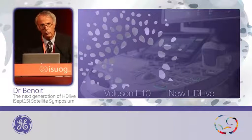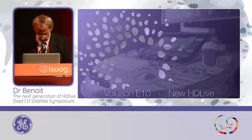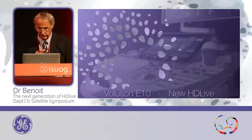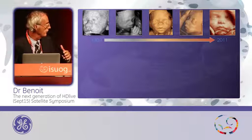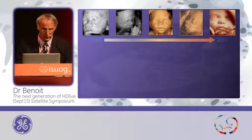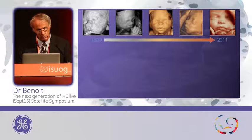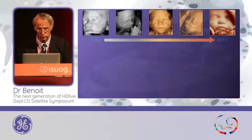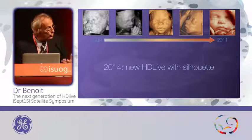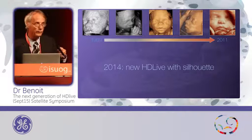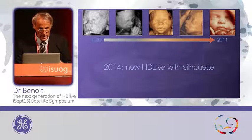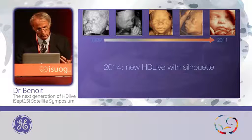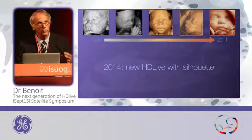I will present the new HDLive, which is a new random mode. This is a timeline of the improvement of the surface mode from 1989 to three years ago — it was HDLive. And what is new this year? This is a new random mode: HDLive with silhouette. And 2014 means we have been using the surface mode in 3D for a quarter of a century.